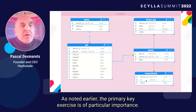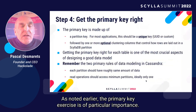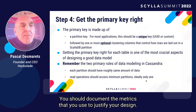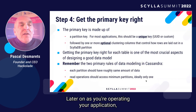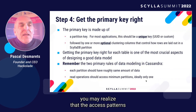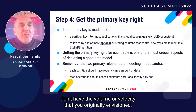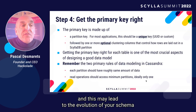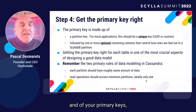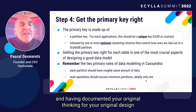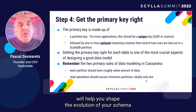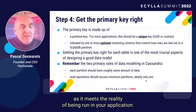As noted earlier, the primary key exercise is of particular importance. You should document the metrics that you use to justify your design. Later on, as you're operating your application, you may realize that the access patterns don't have the volume or velocity that you originally envisioned. And this may lead to the evolution of your schema and of your primary keys. Having documented your original thinking for your original design will help you shape the evolution of your schema as it meets the reality of being run in your application.